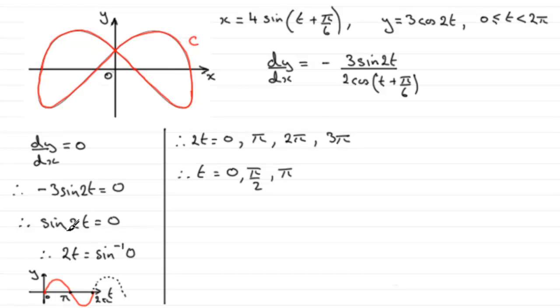when 2t equals 3 pi, the sine of 3 pi would give us 0. And so when I divide 3 by 2 here, we get t equals 3 pi upon 2, which is in range.